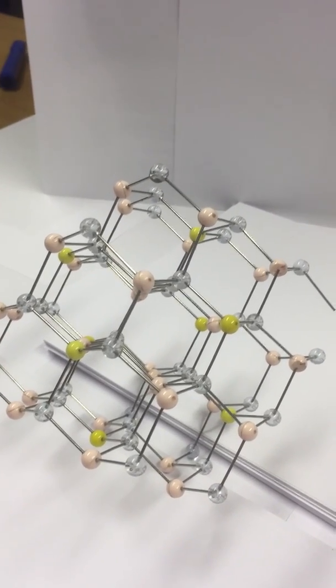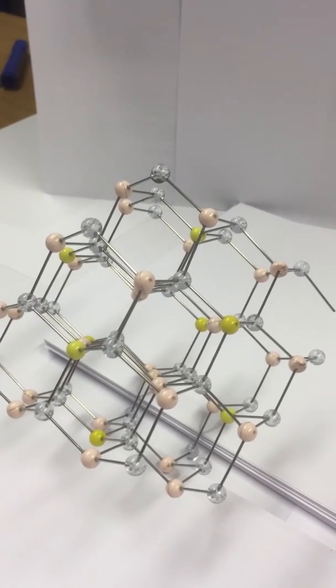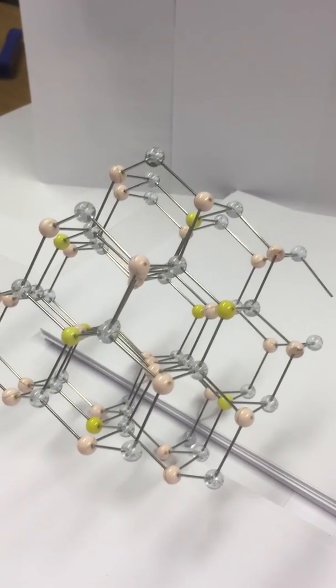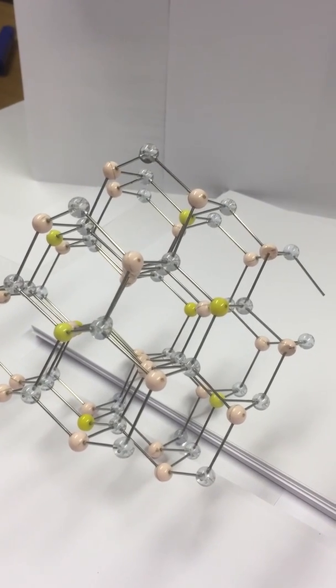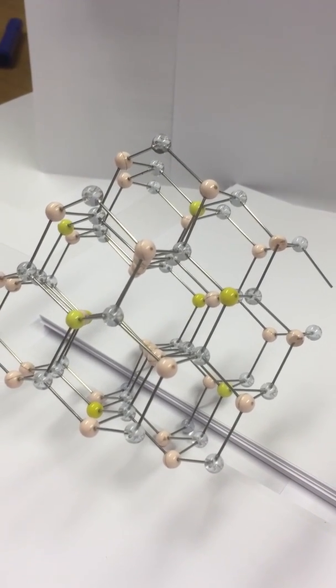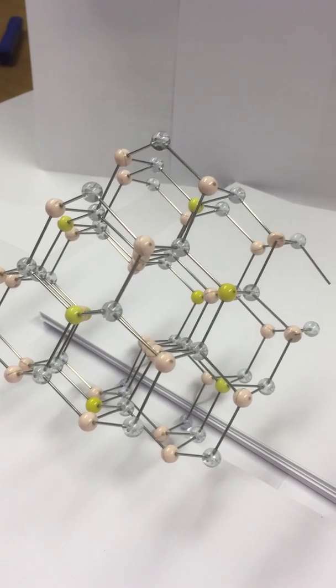OK, so that's the gallium arsenide unit cell itself. And the important thing to notice is that the bonding geometry and the lattice geometry, so the relative placement of atoms and their bonding, are very closely connected and related.